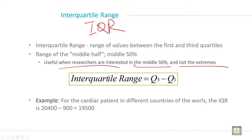The formula for interquartile range IQR is Q3 minus Q1. For example, for the cardiac patient in different countries of the world, the IQR is this is Q3 and minus this is Q1 is equal to 19,500.